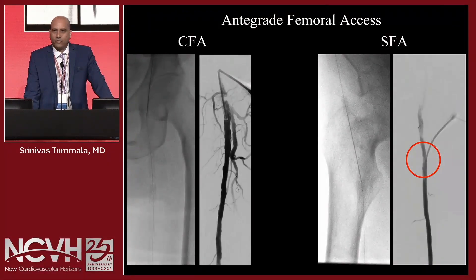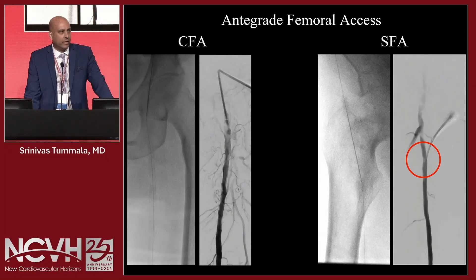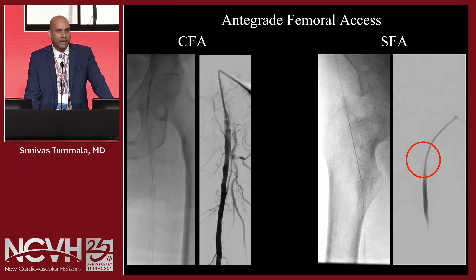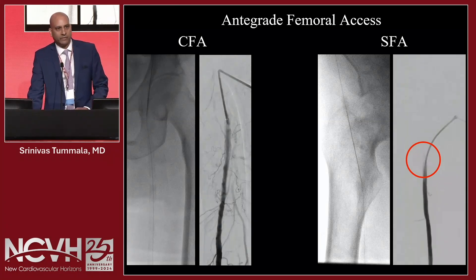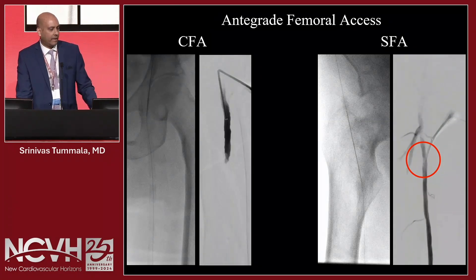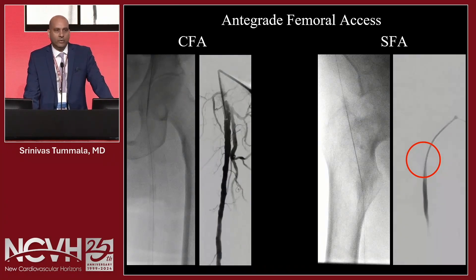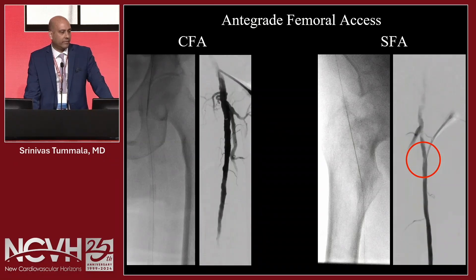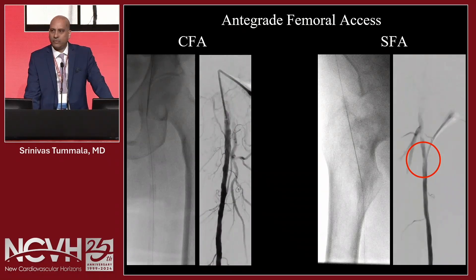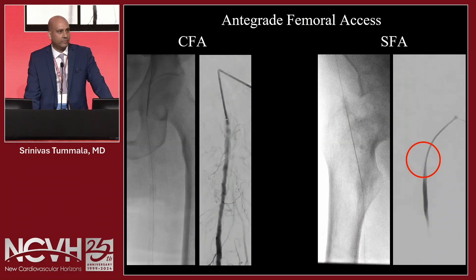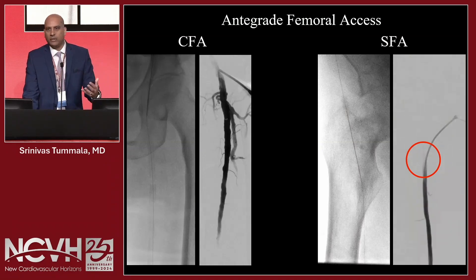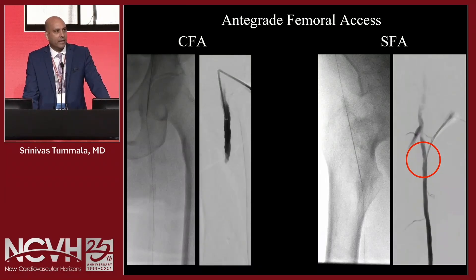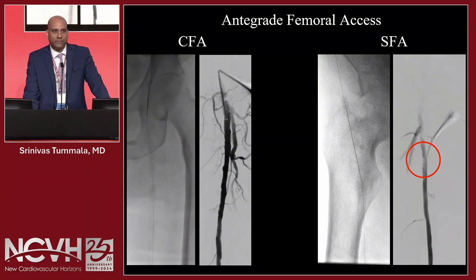When it comes to access, we always talk about retrograde up and over. But when you're dealing with below knee and below ankle disease — and sometimes complex distal SFA and popliteal occlusions — you can do antegrade access. It's a great adjunct. It helps tremendously in terms of ergonomics, radiation exposure to yourself, ease of access, torqueability, pushability, and shorter delivery and catheter systems. Remember not only CFA but also proximal SFA — that's a very good access point and can be used safely in many patients.